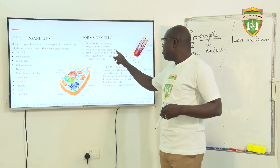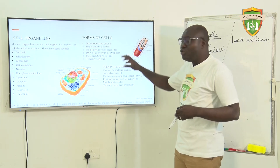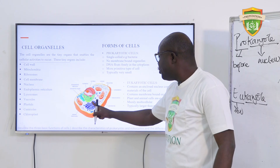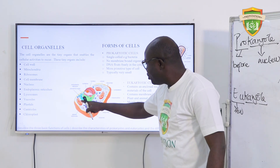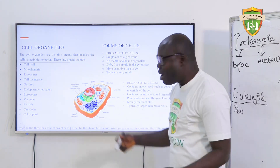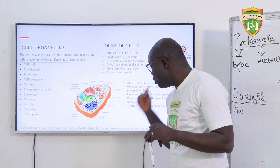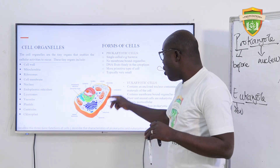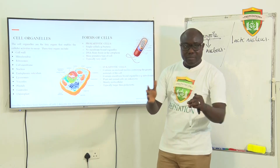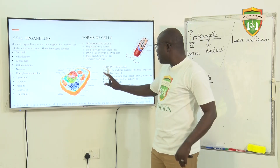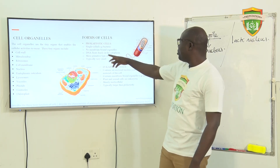There are no membrane-bound organelles in prokaryotic organisms. If you look at a eukaryotic cell, you'll see that all the organelles have an enclosure — there's something demarcating the boundary of the mitochondria from that of the Golgi body and the ribosome. In the case of prokaryotic organisms, there is nothing like that; there are no marked boundaries. Also, DNA floats freely in the cytoplasm of prokaryotic cells.